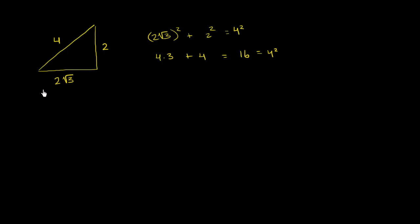If you remember your work from 30-60-90 triangles from geometry, you might recognize this is a 30-60-90 triangle. This right here is our right angle. This angle over here is our 30 degree angle, and this angle up here is 60 degrees. It's a 30-60-90 because the side opposite 30 degrees is half the hypotenuse, and the side opposite 60 degrees is the square root of 3 times the shorter leg. Now let's find the trig ratios for the different angles.